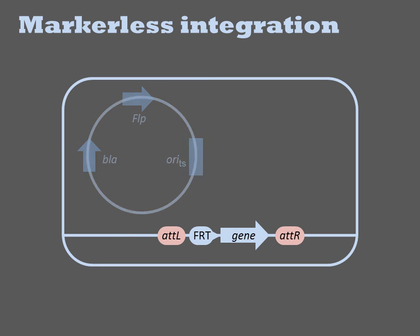The cells are grown again at 42°C to cure them of the helper plasmid. At the end of this process, a gene and a single FRT site are introduced into the genome of an otherwise unmodified cell containing no residual selectable markers.